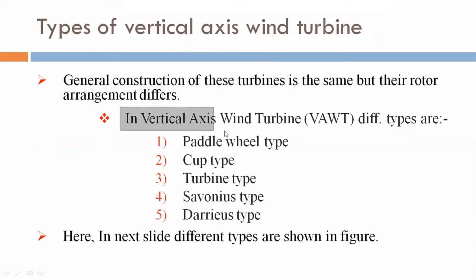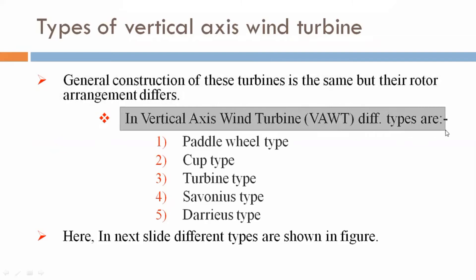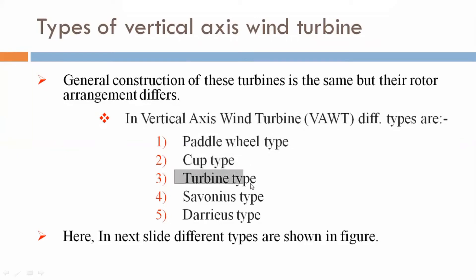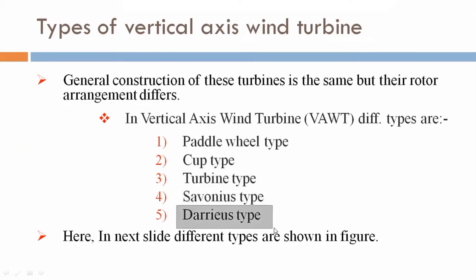In vertical axis wind turbines, different types are: paddle wheel type, cup type, turbine type, Savonius type, and Darrieus type.